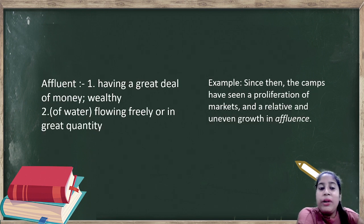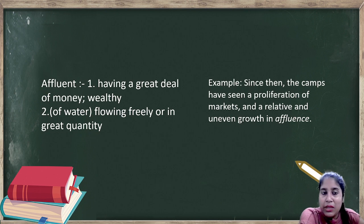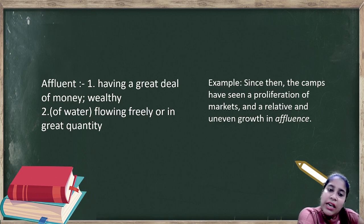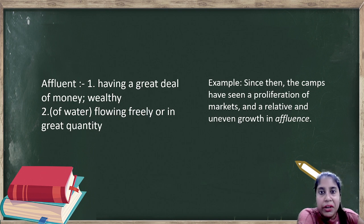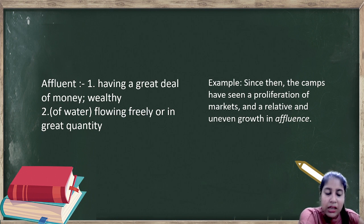Next word is affluent. Now, for affluent you have two meanings given. First meaning is having a great deal of money, or wealthy. Someone who is very wealthy or has a lot of money. Second meaning is flowing freely or in great quantity. Something that is flowing very well or flowing in great quantity is also called affluent. Example: Since then the camps have seen a proliferation of markets and a relative and uneven growth in affluence. Meaning in money, in terms of finance, in terms of wealth.